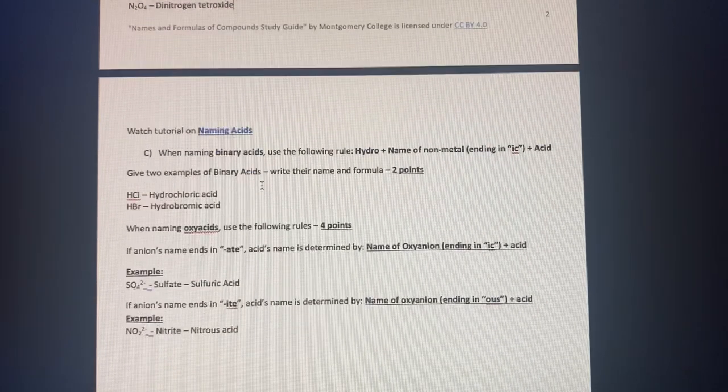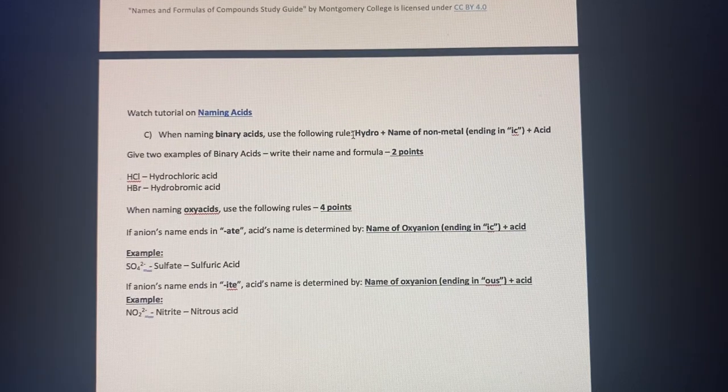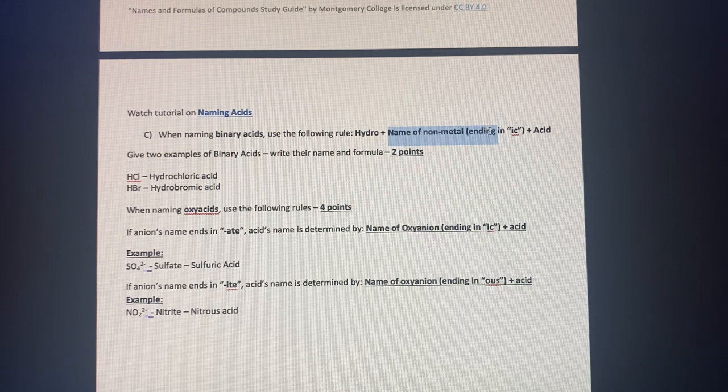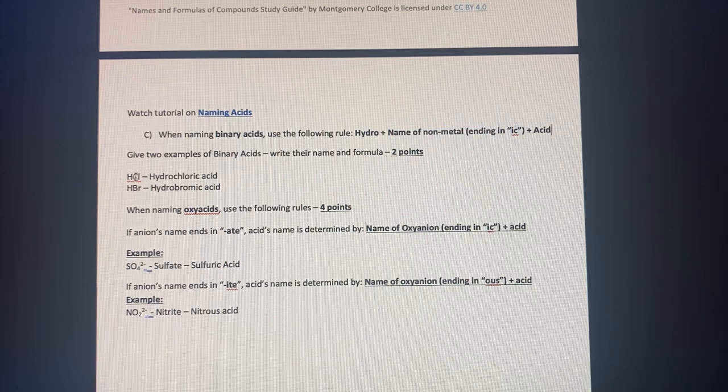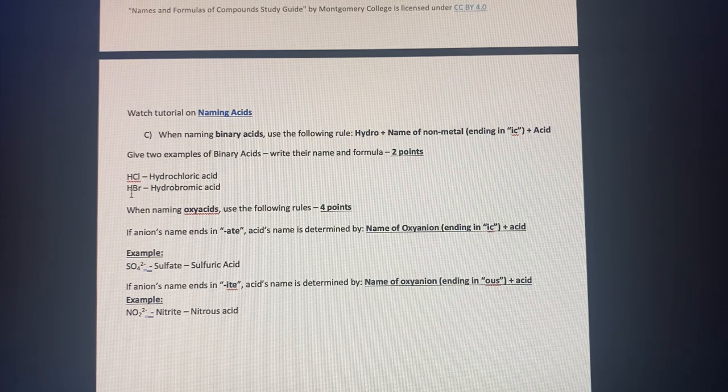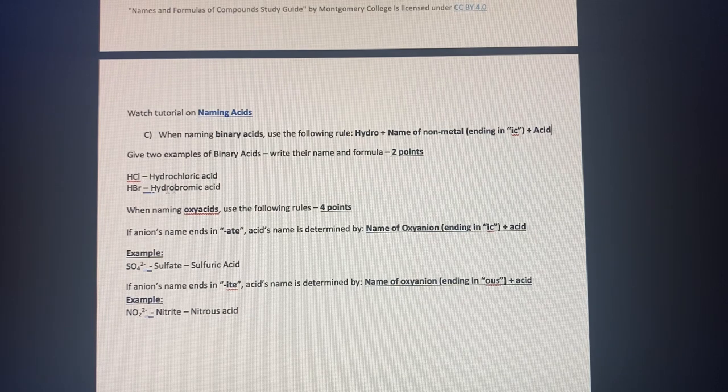And then go down to binary acids, where we do hydro, plus the name of the nonmetal ending in IC and acid. So for hydrogen chlorine, we have hydrochloric acid, and then hydrogen and bromine, we have hydrobromic acid.